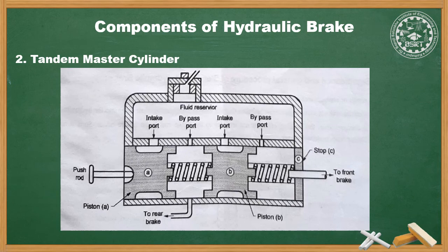During normal working of the tandem master cylinder, brake fluid is transmitted to both front and rear brakes when the brake pedal is pressed. If the brake lines at the front are damaged, piston B moves until it comes up against stop C. After this, pressure starts building up in the space between A and B, and the rear brakes are applied. Similarly, when the rear brake line is damaged, no pressure is built up between A and B, so the piston moves freely until it comes against B. Further movement of the brake pedal moves both A and B together, applying the front brakes.